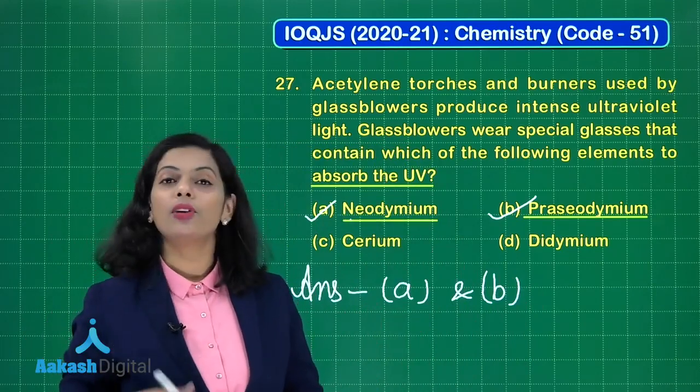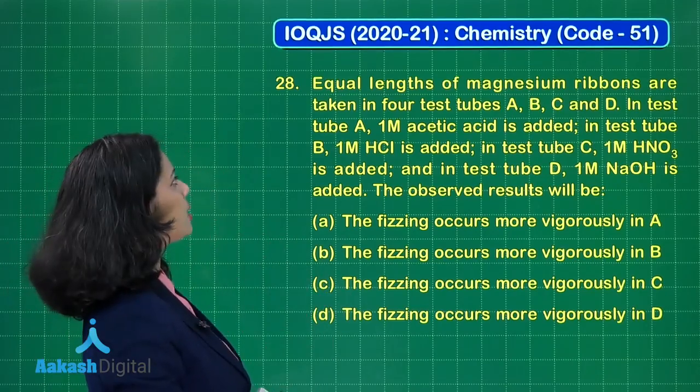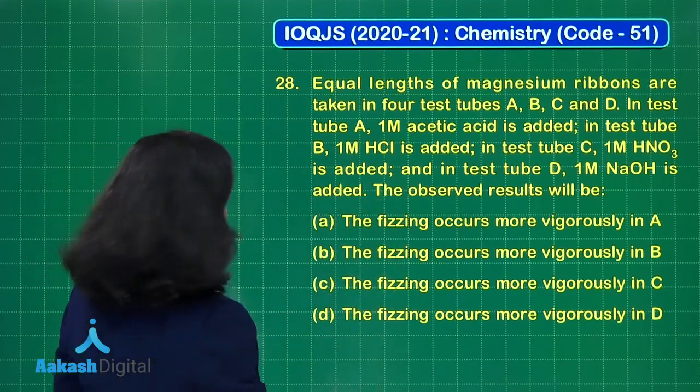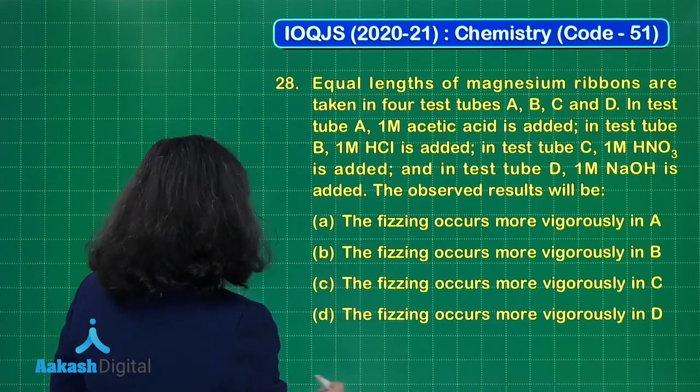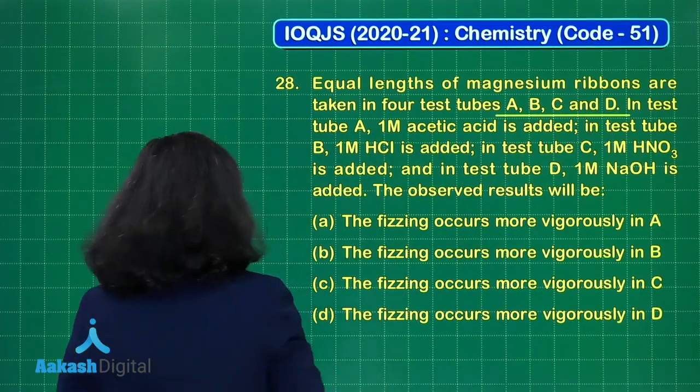Now the turn is there for the next question. Question number 28 is here. Equal lengths of magnesium ribbons are taken in four test tubes A, B, C and D. Let me just mark four test tubes are there: A, B, C and D.